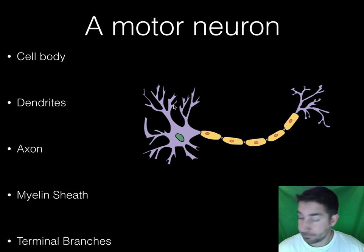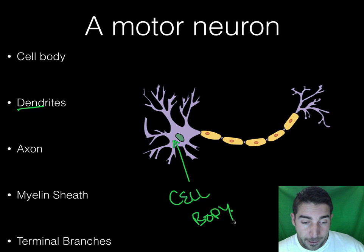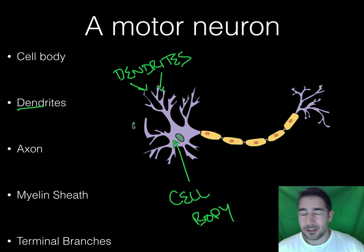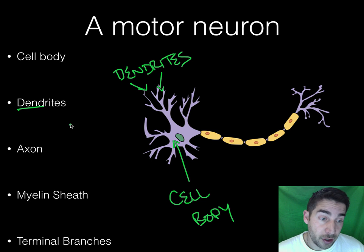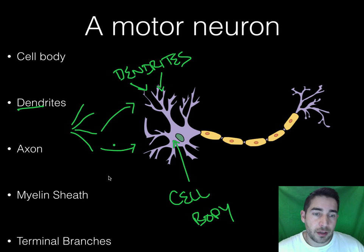Moving back to dendrites: the cell body is the powerhouse that gets things going. The dendrites are these little branches that receive incoming information — not from the outside world directly, but from other cells or other neurons. There are billions of these neurons operating inside your body. Imagine another neuron right next to this one sending information over to these dendrite branches. So dendrites receive incoming information.